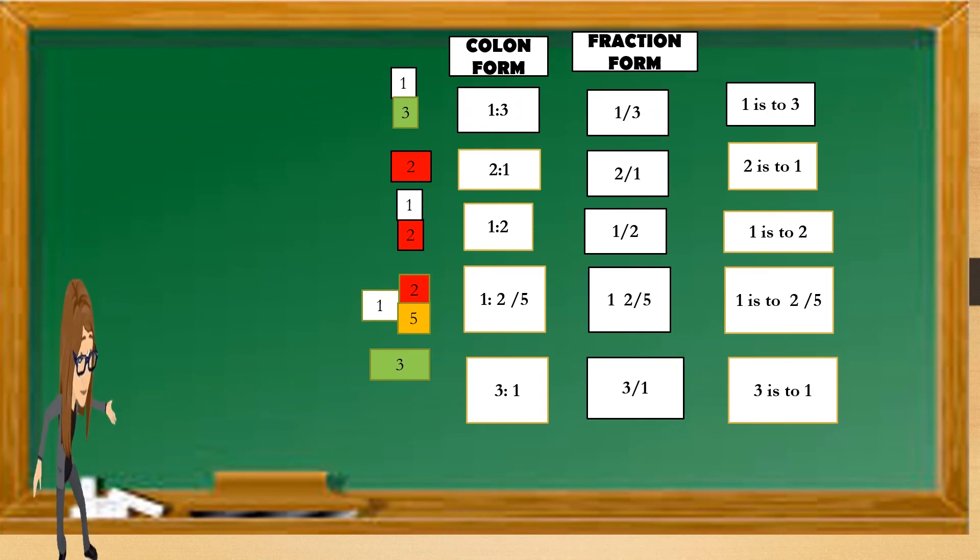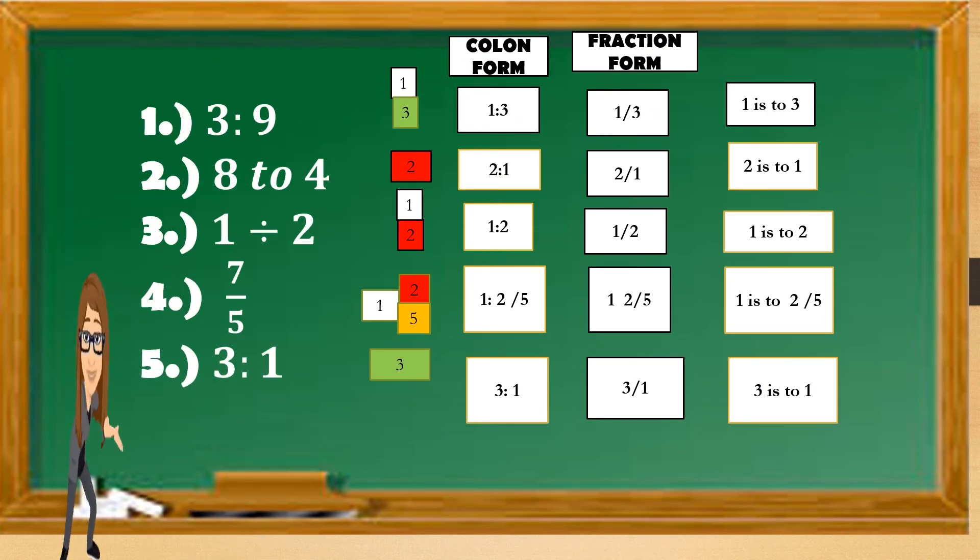So we have here in colon form: 3 is to 9 is 1 is to 3, or 1 third. And then 8 to 4, we have 2 is to 1, or 2 over 1. And also number 3, we have 1 is to 2, or 1 half. And number 4, we have 7 is to 5, or 1 and 2 fifths. And number 5, we have 3 is to 1, or 3 over 1.